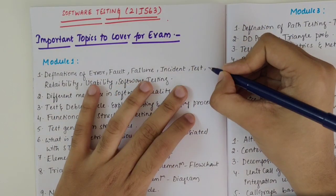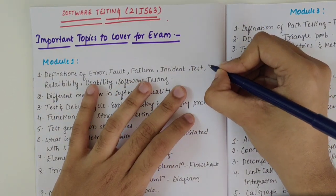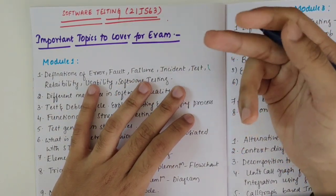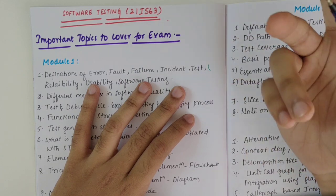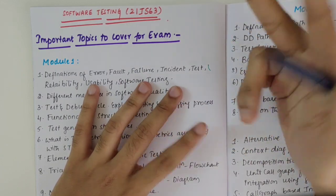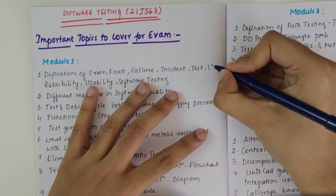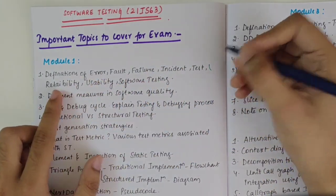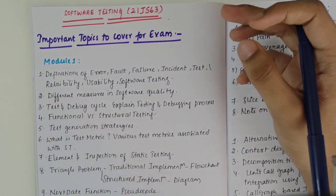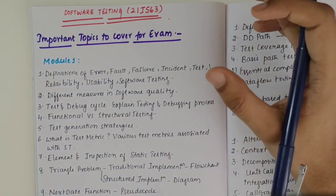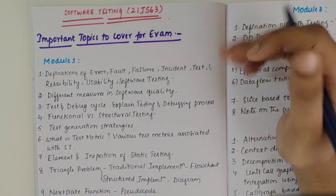Each definition could comprise one mark, so it could be asked for either six, four, eight, two, or five marks — it depends. But make sure that you go through all the definitions present in the first module.